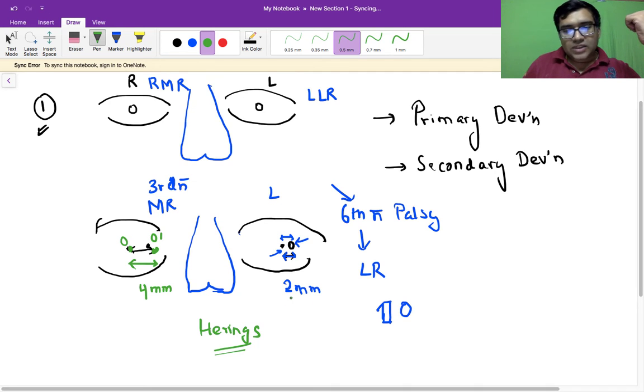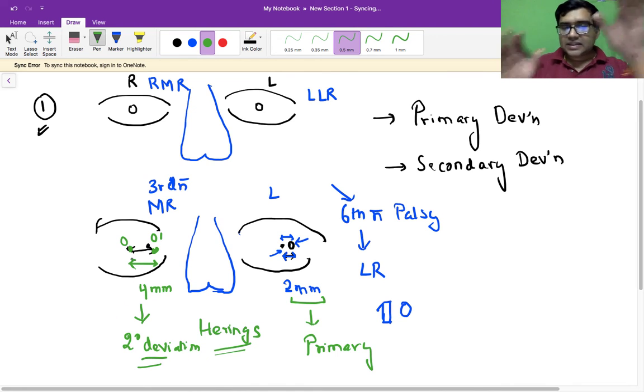So this 2 millimeter is called primary deviation and this 4 millimeter is called secondary deviation. And because your the nerve which supplies your yoke muscle in